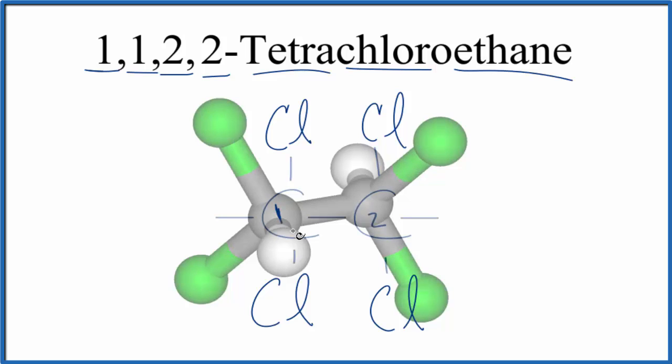You can see we have carbon one and carbon two right here. On carbon one, we have one, two chlorine atoms and a hydrogen atom. And then on carbon two, we have one, two chlorine atoms and a hydrogen atom.